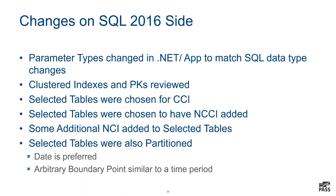We did have to make some changes on the database side — some parameter data types we changed in the .NET application to match the SQL Server data type. We used a combination of clustered column store indexes, non-clustered column store indexes, and regular row store indexing. We also chose certain tables we wanted to keep partitioning on because of their size. For those times when we couldn't get the exact partitioning to line up — like the referential partitioning issue — we had to assign arbitrary boundary points in hopes that we would get partition elimination if we needed it.